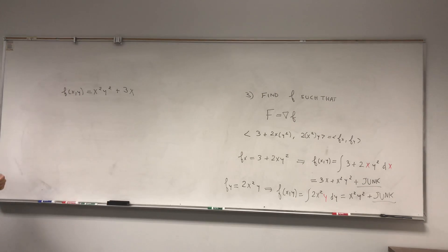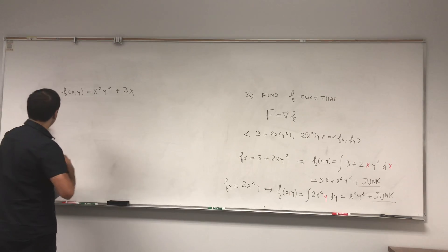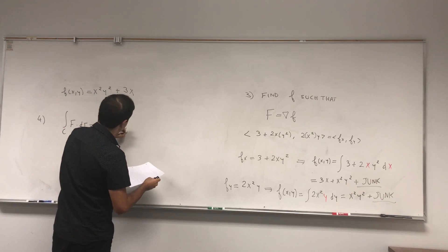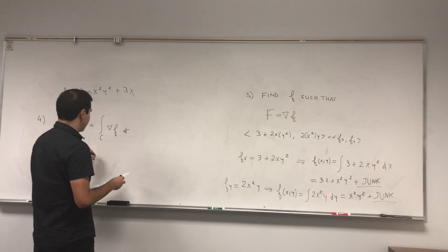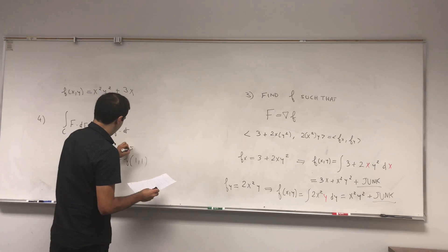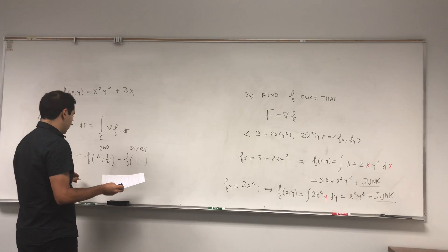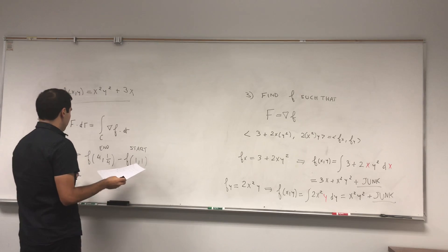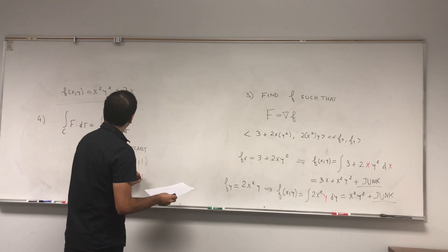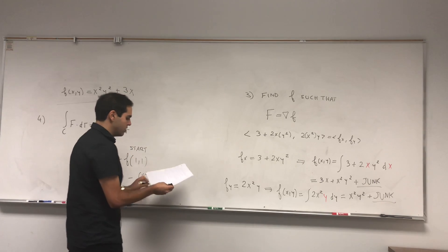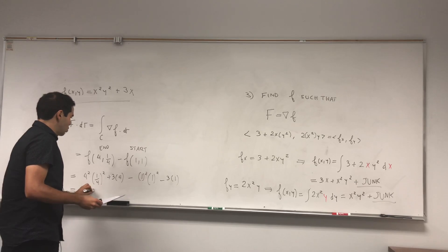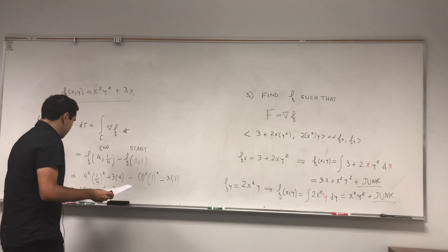So f of xy becomes x squared y squared plus 3x. Now it looks complicated but the worst part is done, because now we can just use the FTC. So integral of F dotted with dr. Again we just found that F is the gradient of little f, and that just becomes f of the end point, which is 4, 1/4, minus f of the starting point. And then just becomes so. Remember, f is x squared y squared plus 3x. So 4 squared, 1/4 squared, plus 3 times 4, minus 1 squared, 1 over 1 squared, so 1 squared 1 squared minus 3 times 1. And so this will get 16 over 16 which is 1 plus 12 minus 1 minus 3.